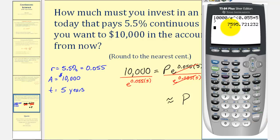So you'd have to invest $7,595.72 today in order to have a balance of $10,000 five years from now.